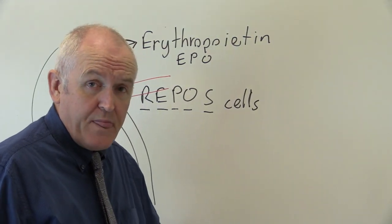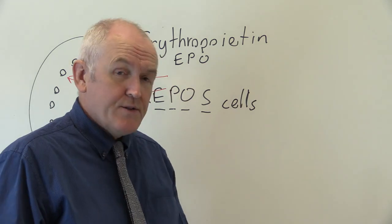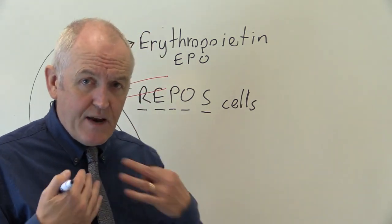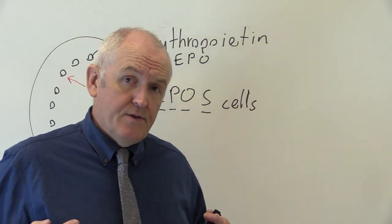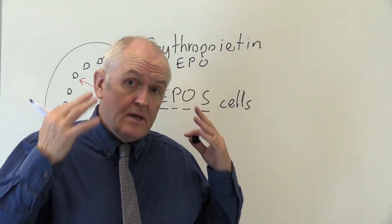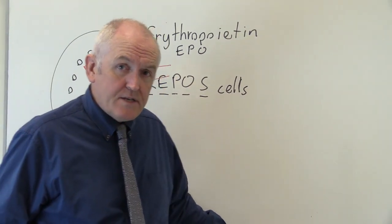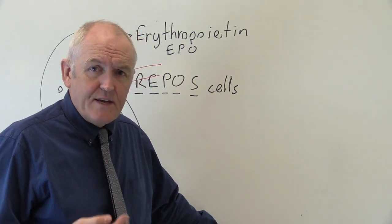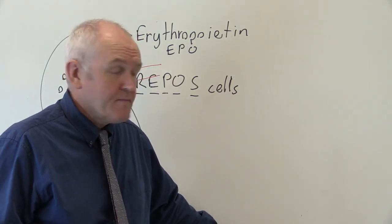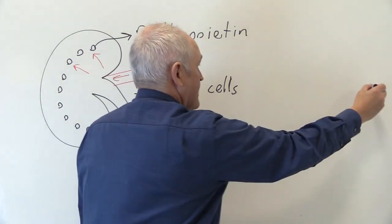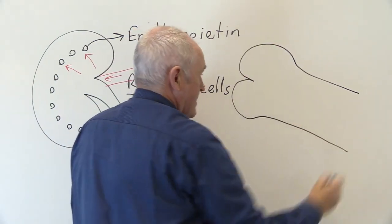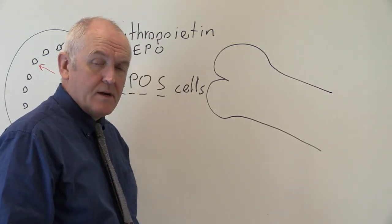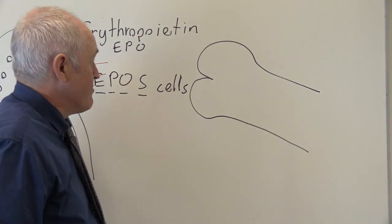It goes to the red bone marrow. Now as you probably know there's red bone marrow in the flat bones like the sternum and the ribs, the skull, the flat bones of the pelvis, and also there's red bone marrow in the ends of the long bones. So here we have a long bone, and in the end of the long bone we've got the red bone marrow.